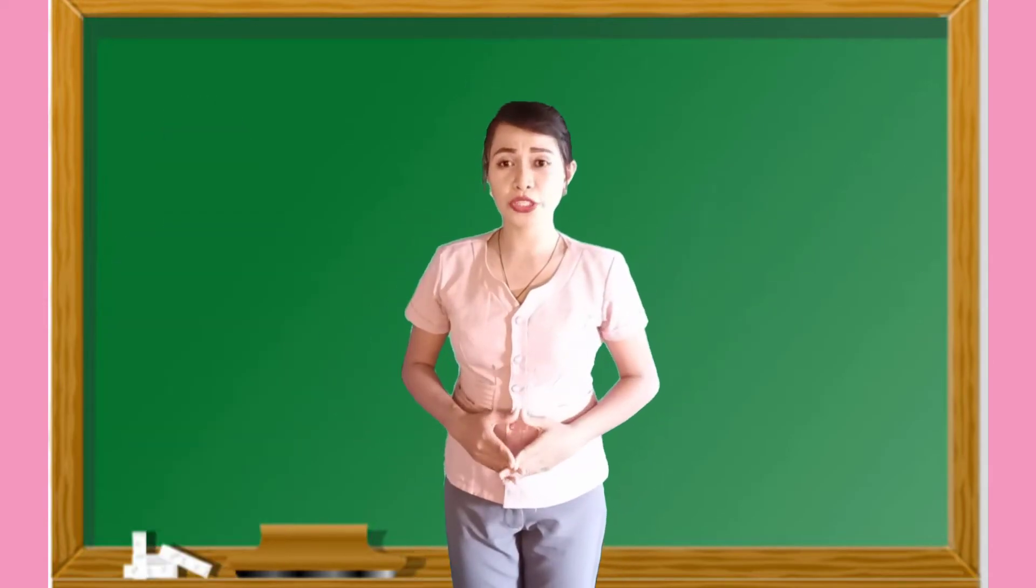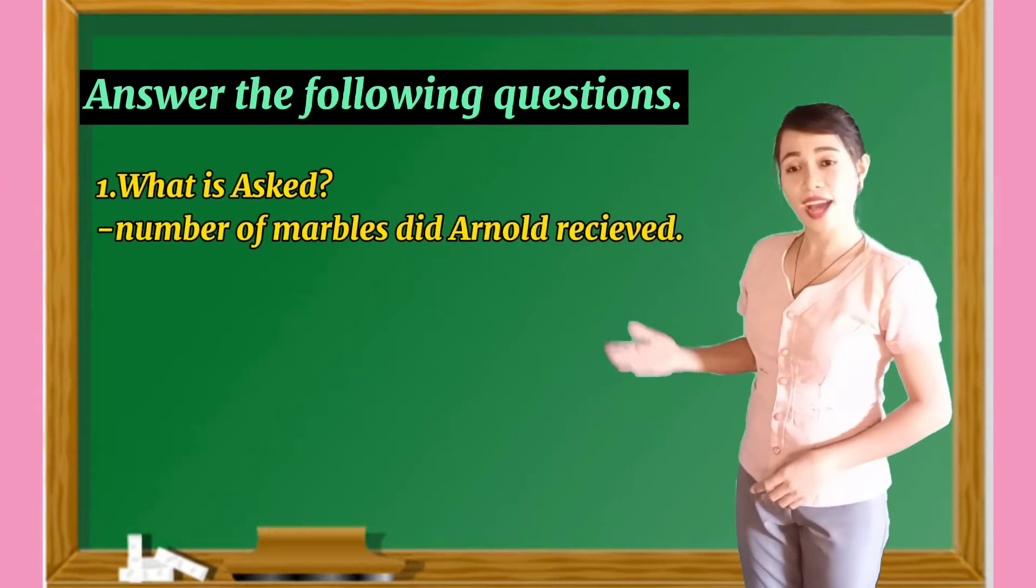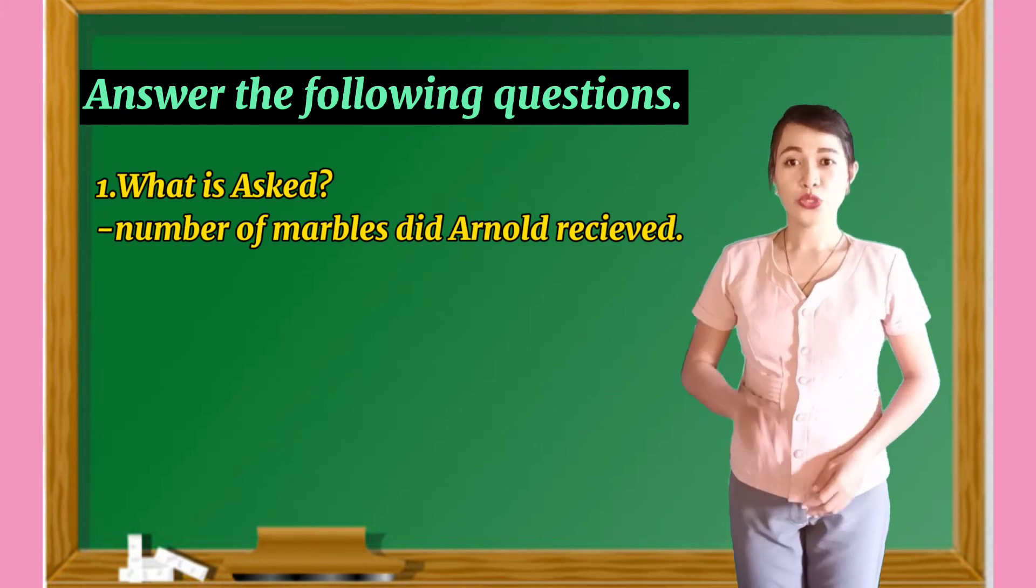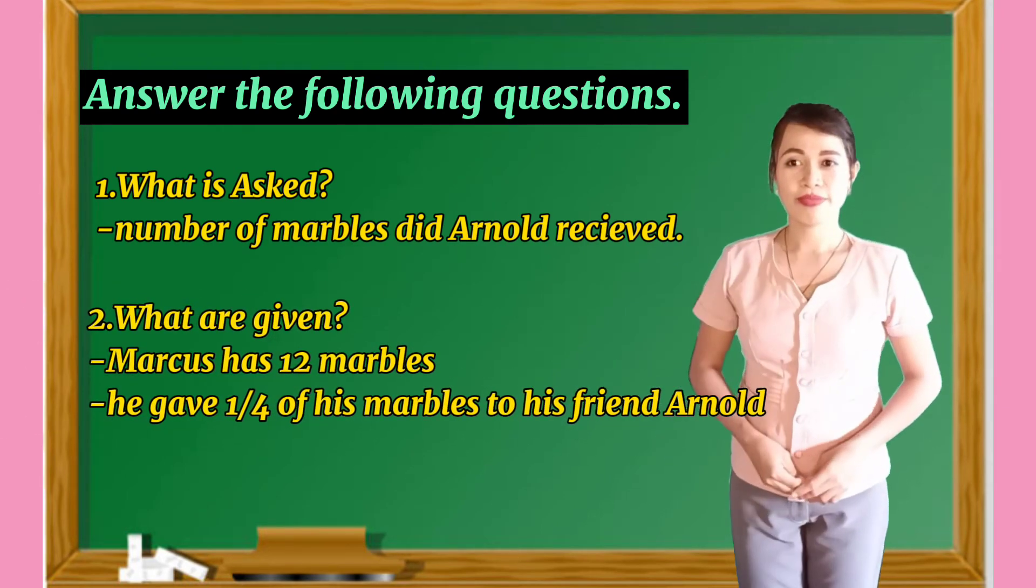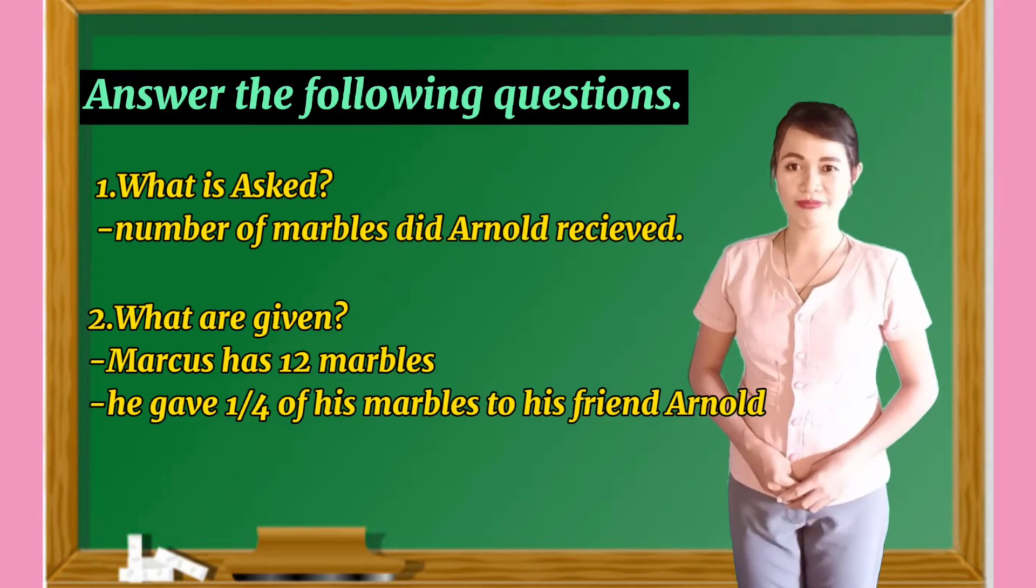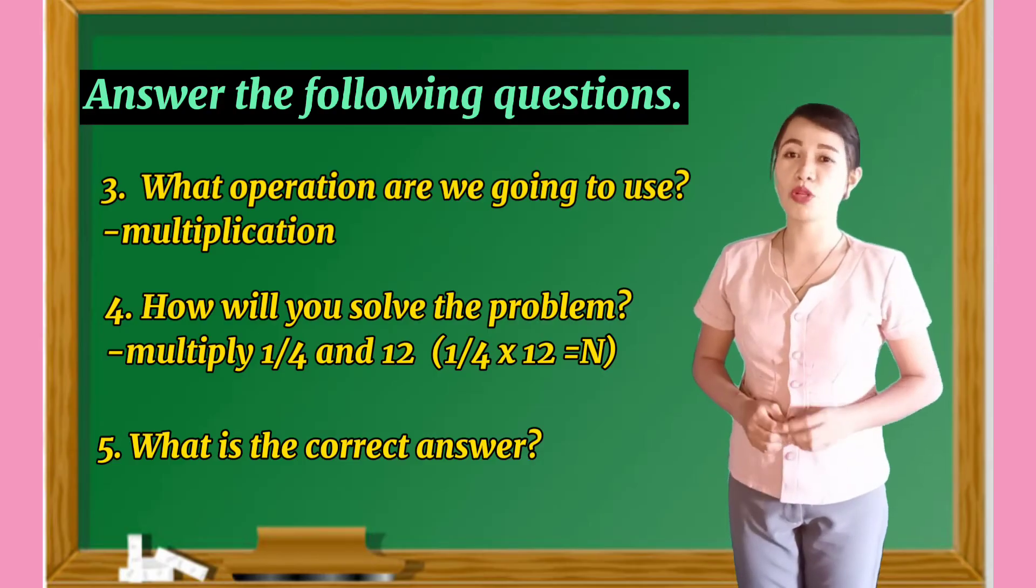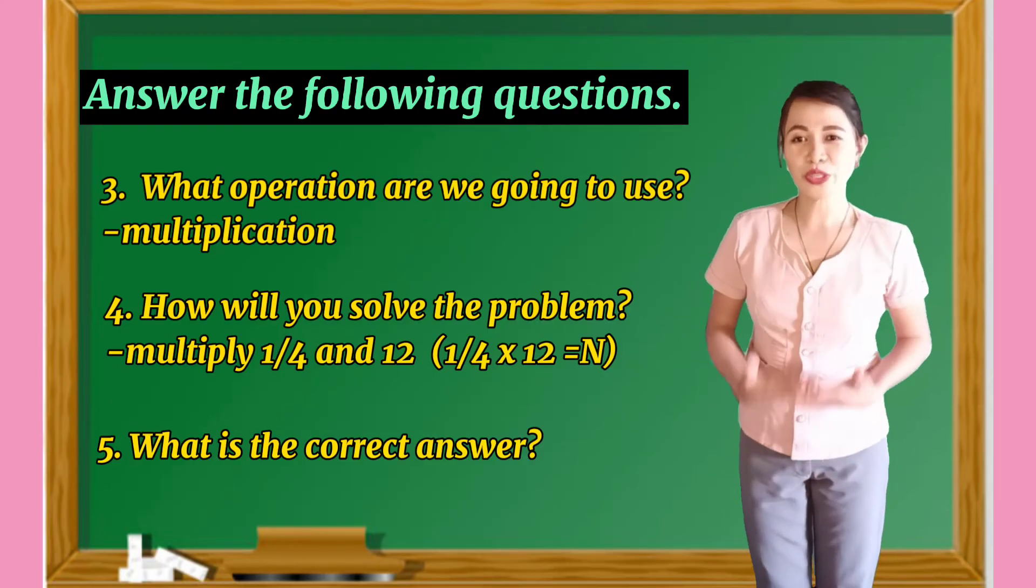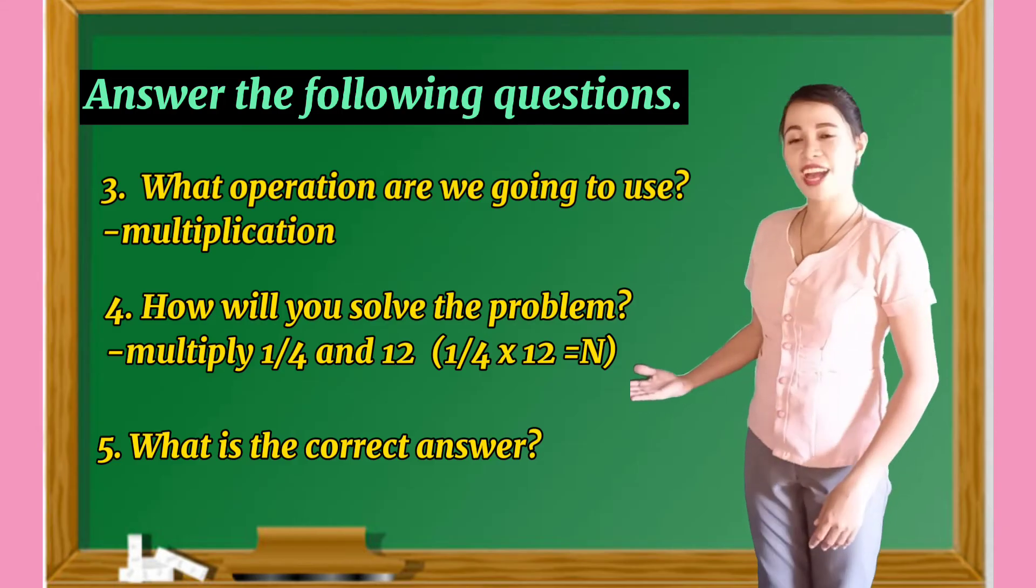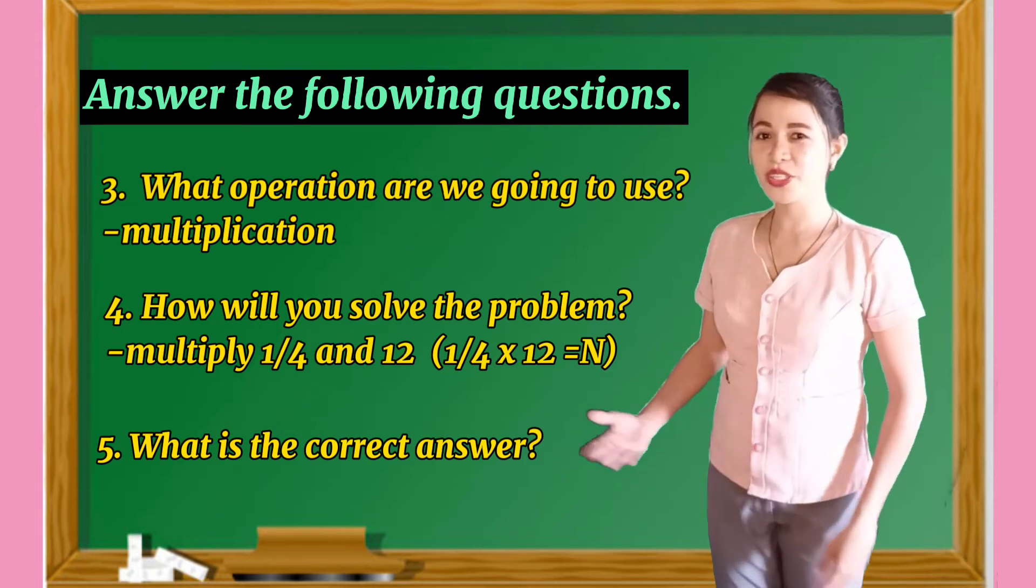So, in order for us to answer the word problem, we have to answer the following guide question. Number one, what is asked? It is the number of marbles did Arnold receive. Number two, what are given? Marcus has 12 marbles, and he gave one-fourth of his marbles to his friend Arnold. Third, what operation are we going to use? Of course, multiplication. Number four, how will you solve the problem? By multiply one-fourth and twelve, or one-fourth times twelve is equals to n. And the last guide question is, what is the correct answer?